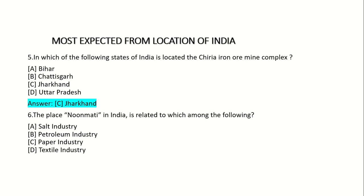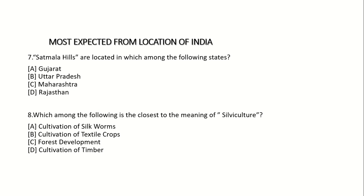Sixth question: The place Noonmati in India is related to which among the following? Option A: Salt industry. Option B: Petroleum industry. Option C: Paper industry. Option D: Textile industry. Answer: Option B — Petroleum industry.